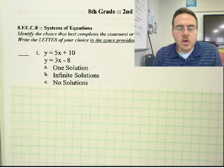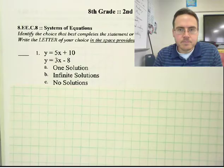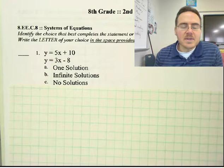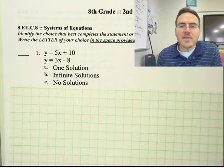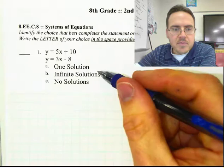Starting with problem number one. This is systems of equations. If you look up systems of equations, there are a lot of ways to do these. I'm just going to go over the basic route we've been using in class, and that is setting them equal to each other. Because we want to know when these two lines would cross, or if they would ever cross. When it says one solution, infinite solutions, and no solutions, I should explain what that means.